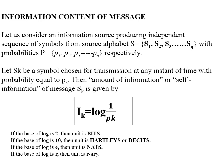Then the amount of information, or self-information, of a message is given as Ik = log(1/Pk). There are different units to measure this information content: if the base of the log is 2, the unit is bits; if the base is 10, the unit is Hartley or decits; if the base is e, the unit is Nats; and if the base is other than e, 10, and 2, the unit is R-ary units. So self-information is defined as Ik = log(1/Pk), which is inversely proportional to the probability of occurrence.